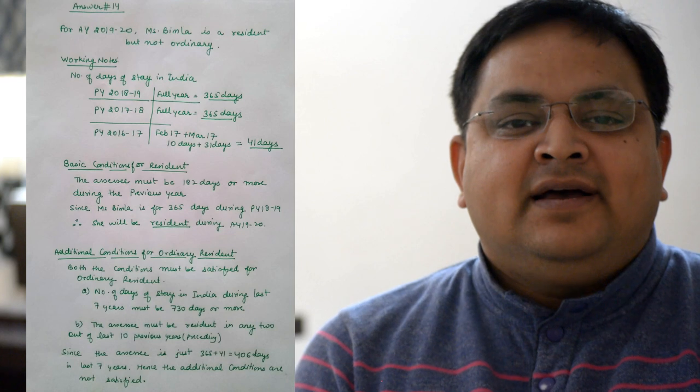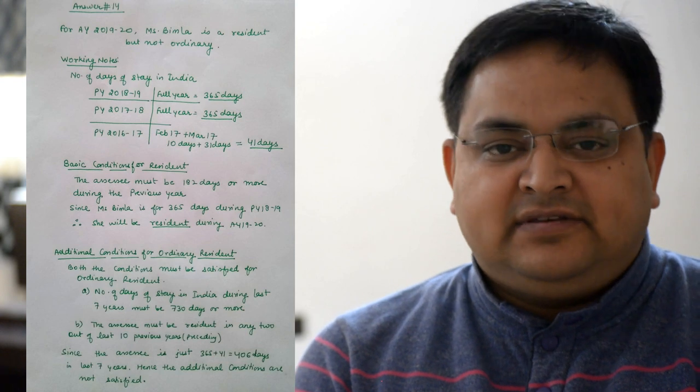So she is a resident. Ek baar ek individual assessee resident ho jata hai usko further check karna padta hai ki kya ye ordinary resident hai ya not ordinary. Uske liye do additional conditions bhi hai: assessee preceding 7 years mein 730 days or more India mein ho, aur pichle 10 saal mein se kam se kam 2 saal mein woh resident ho. Agar hum inke pichle saalon ke number of days count karenge jab se ye India mein aaye hain, toh last year mein ye 365 days thi, aur February ke 10 days aur March ke 31 days bante hain, that is 41.